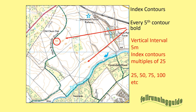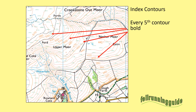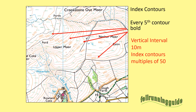Just want you to have a look at that height circled there because we're going to come on to that in a moment — so just remember that. Again, every fifth contour is bold on the maps where the vertical interval is 10 metres. You can see the 400, the 450, the 500, the 550 contour lines are slightly thicker than the other ones.